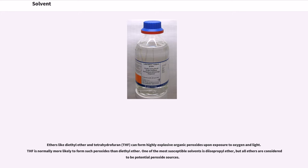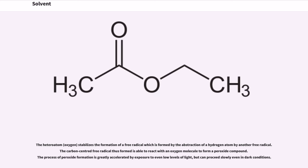The heteroatom, oxygen, stabilizes the formation of a free radical which is formed by the abstraction of a hydrogen atom by another free radical. The carbon-centered free radical thus formed is able to react with an oxygen molecule to form a peroxide compound. The process of peroxide formation is greatly accelerated by exposure to even low levels of light, but can proceed slowly even in dark conditions.